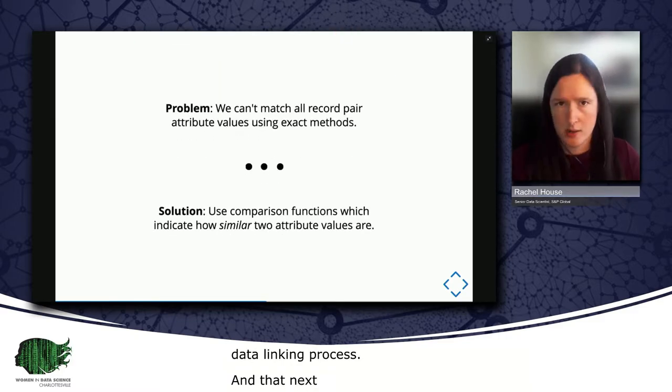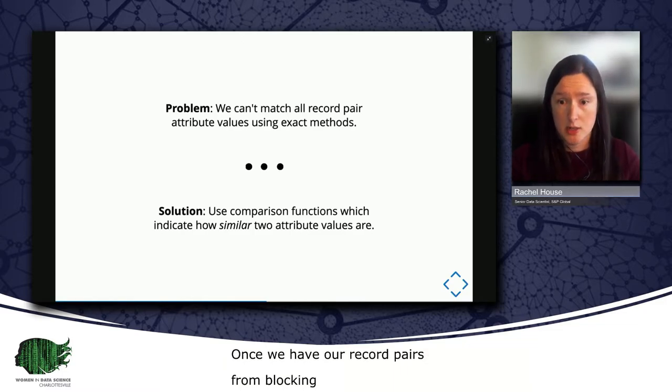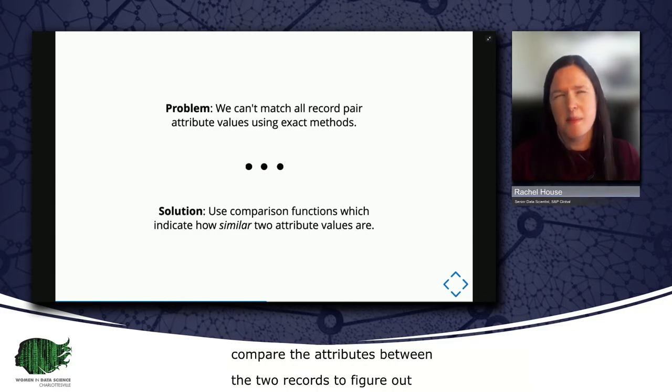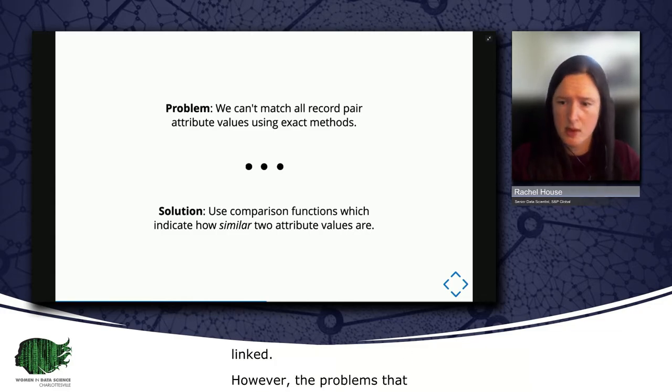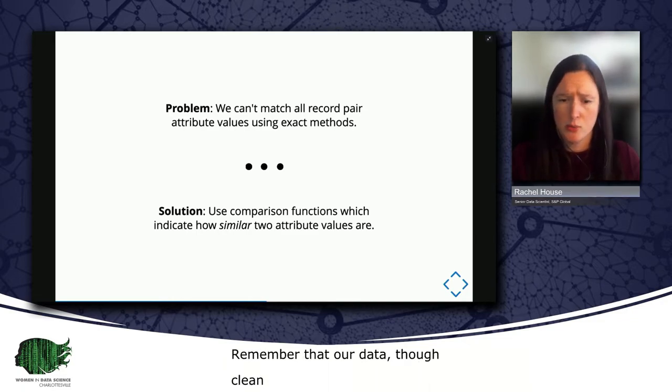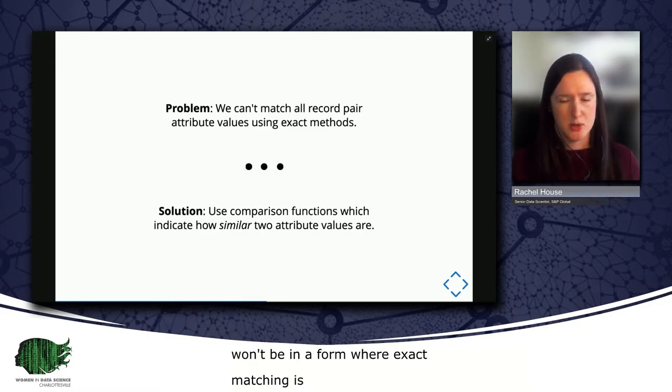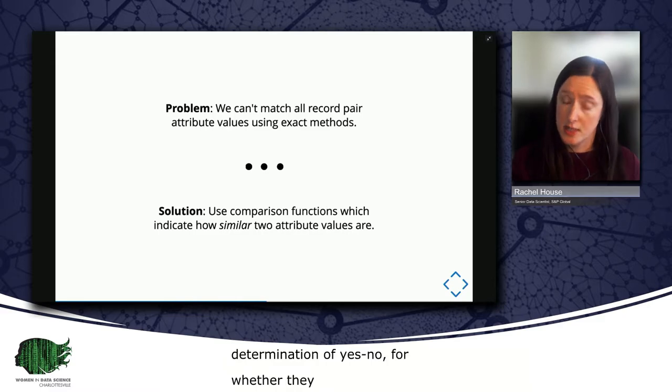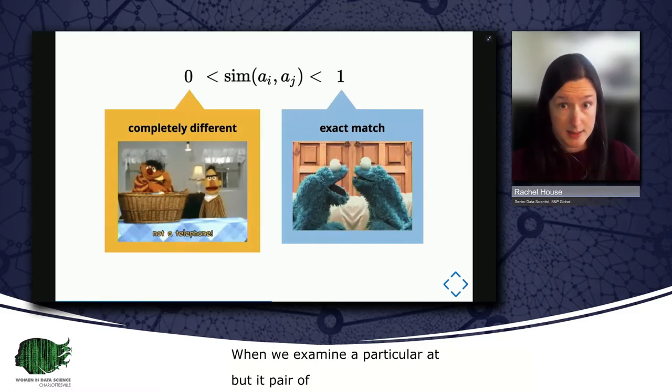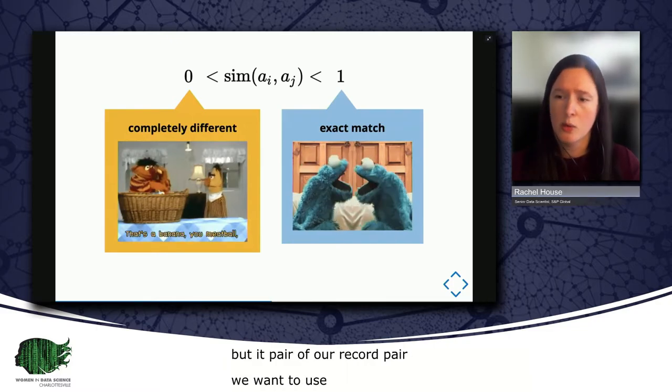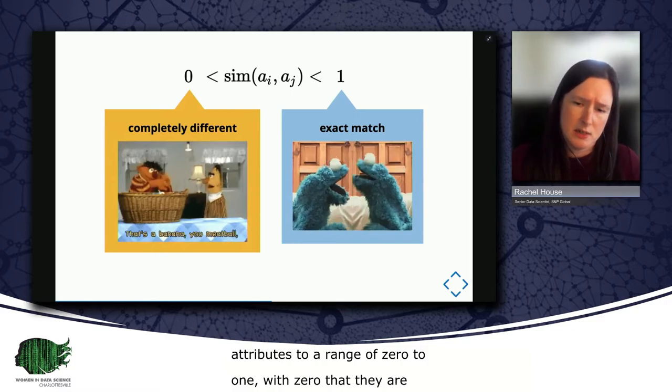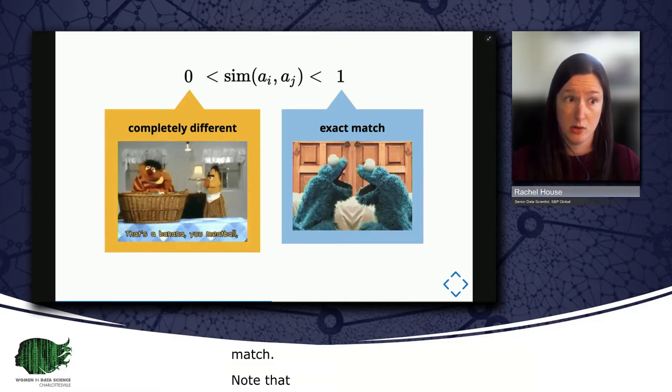Once we have our record pairs from blocking, we'll want to compare each pair. Now, each record from each pair is going to have a collection of attributes, and we want to compare these attributes between the two records to figure out whether or not the pair are linked. However, the problem is that we can't just see if the attributes match exactly and then call it a day. Remember that our data, though cleaned and preprocessed, still likely won't be in a form where exact matching is always possible. And so rather than a binary determination of yes-no for whether two attributes match, we can place their degree of similarity on a scale or continuum. When we examine a particular attribute pair of our record pair, we want to use a similarity function which normalizes the difference between the attributes to a range of zero to one, with zero indicating that the attributes are completely different and one indicating that they're an exact match.